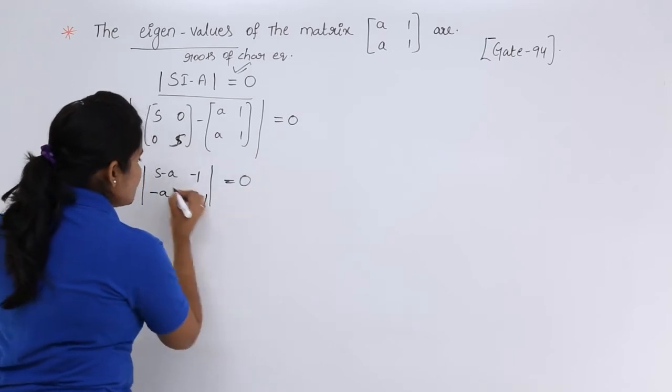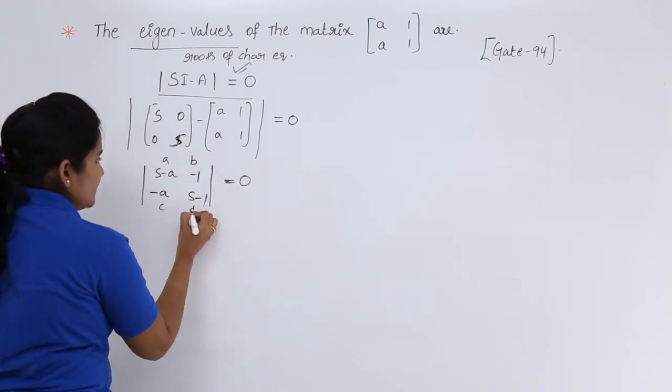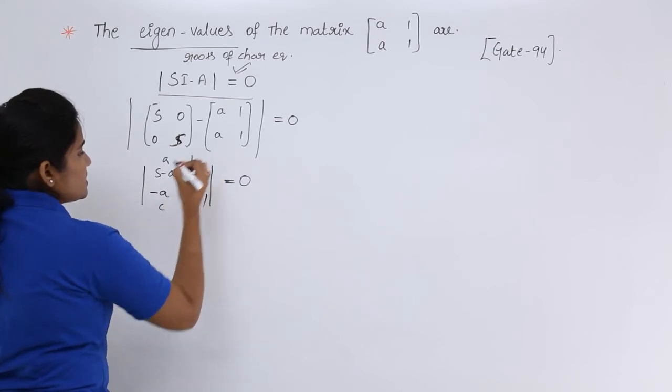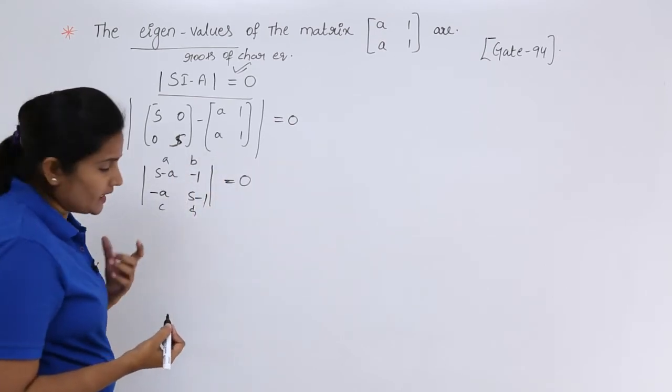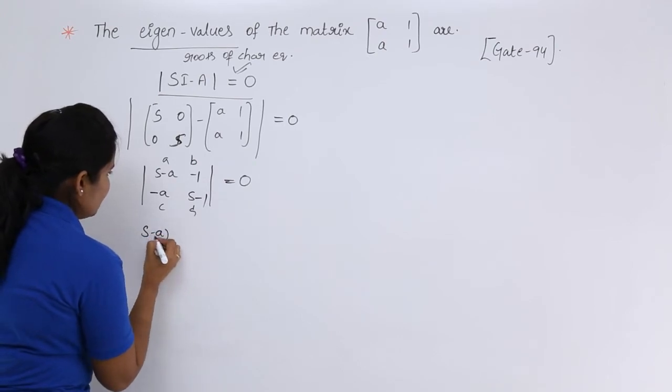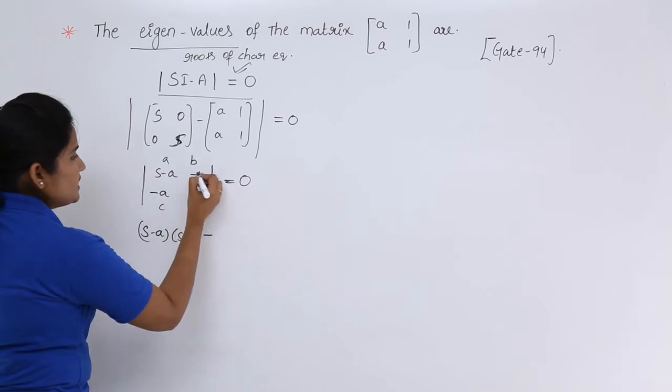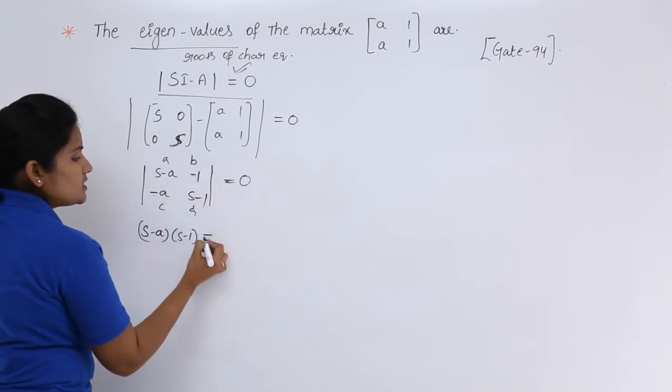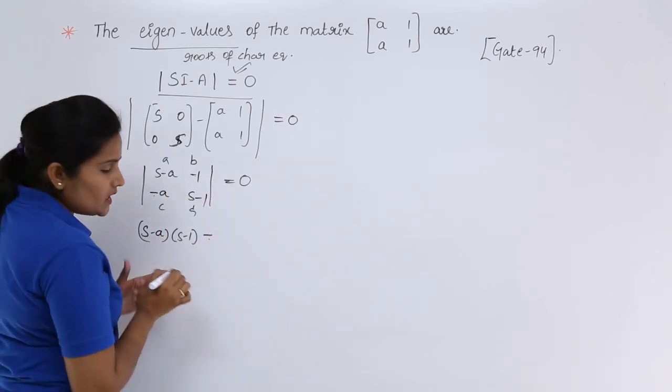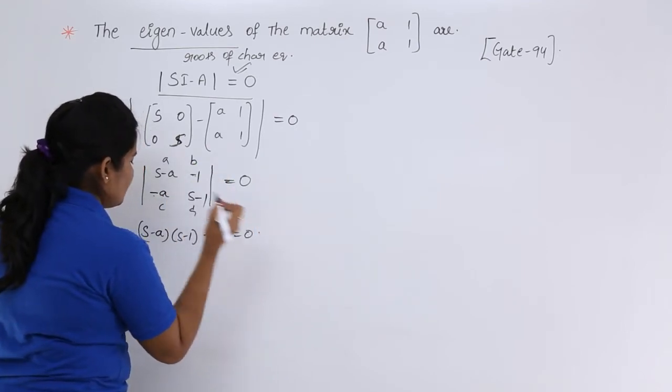So modulus of this matrix will be, for example, if this is A, B, C, D, then AD minus BC you are supposed to take. So here AD is nothing but S minus A into S minus 1 minus BC. Both have minus and minus so you will get minus only. So AD minus BC is equal to 0.